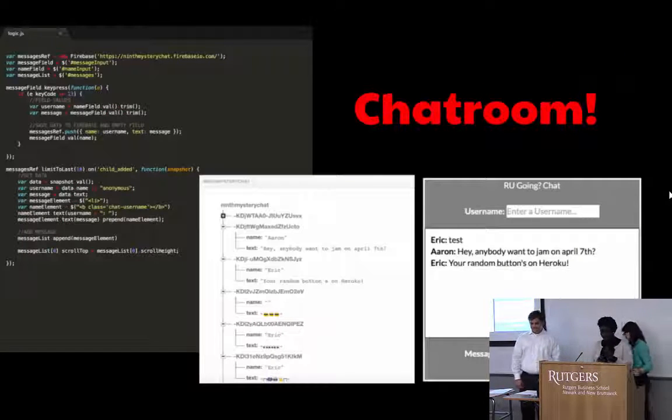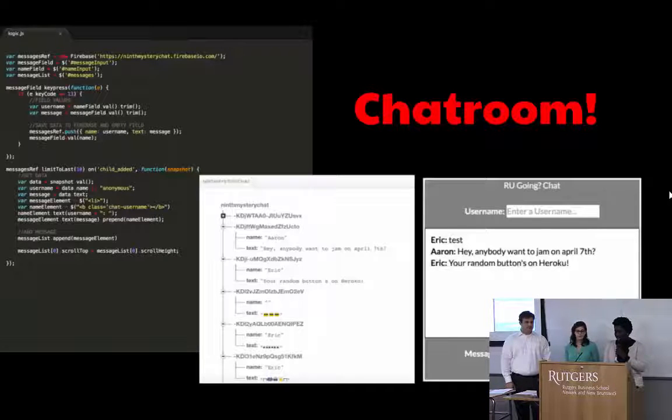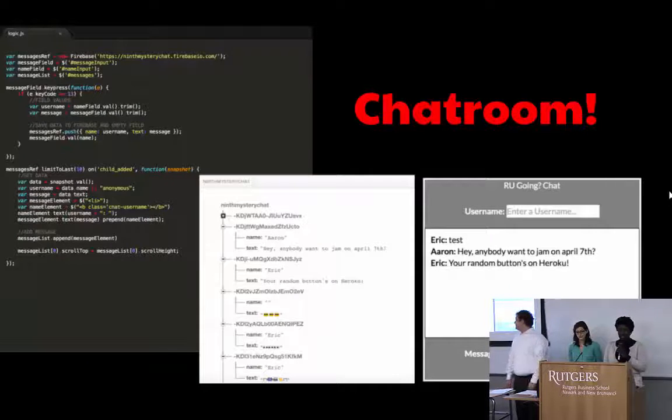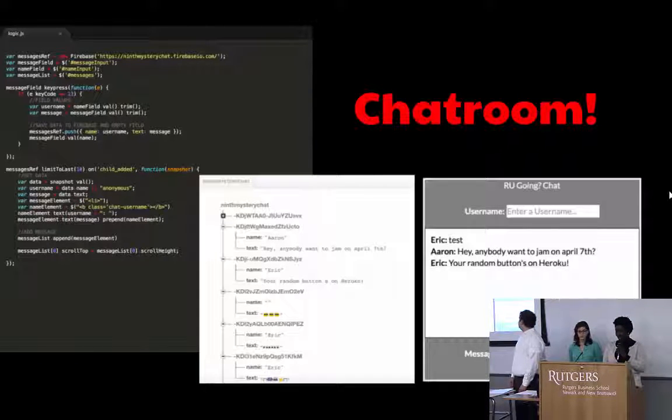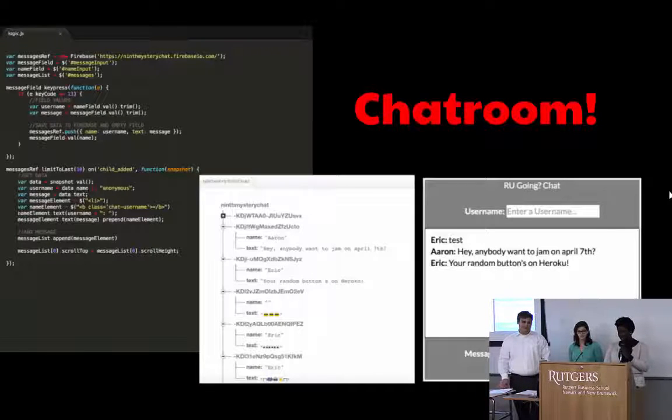For the chat room, we create a Firebase link and variables that we would use later on. When you press enter, it will take all the spaces out of the name and the message field values, and push them to Firebase. We then set the number of messages we wanted to show on the message area. And then we got the data by using the snapshot.val function. We were able to create elements that would append to the message area as well as a way for the message to scroll to the bottom once you press enter when you fill up a new message.